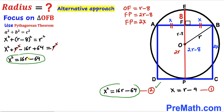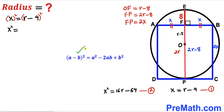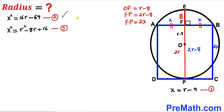Now let's focus on Equation 1 again: x = r − 4. Squaring both sides, the left side becomes x², and applying the identity (a − b)² = a² − 2ab + b² to the right side gives x² = r² − 8r + 16. This is Equation 3.